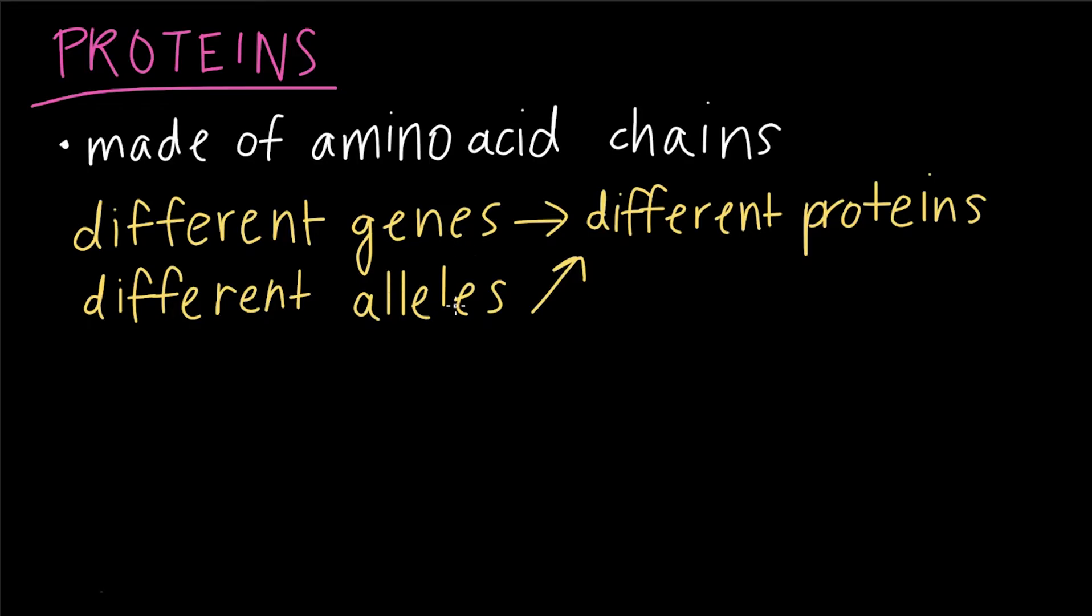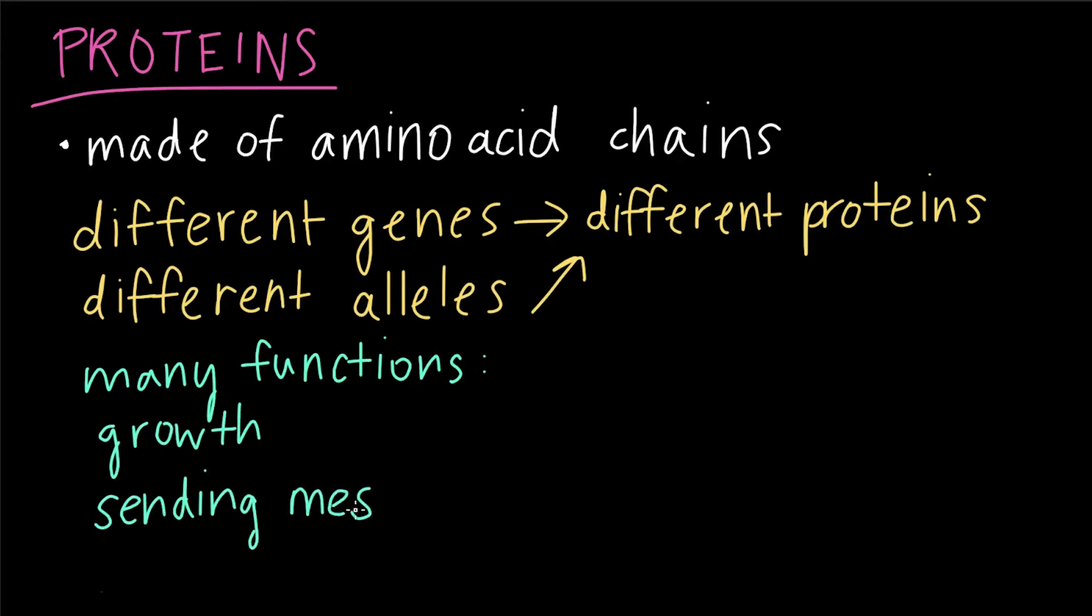An organism has many different genes, which means an organism has the capacity to produce many different kinds of proteins. Proteins serve all kinds of functions, some of which include growth, sending messages, catalyzing chemical reactions, if you have heard of enzymes before, and providing structure.